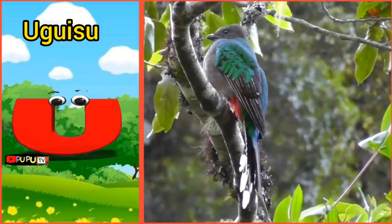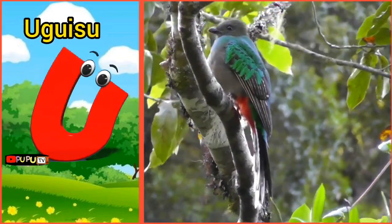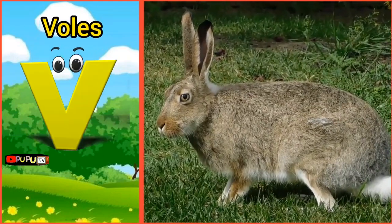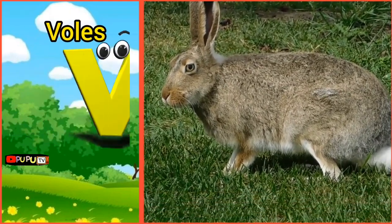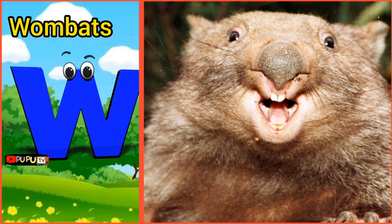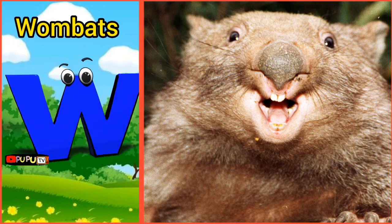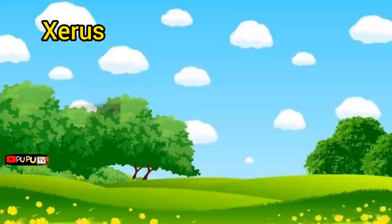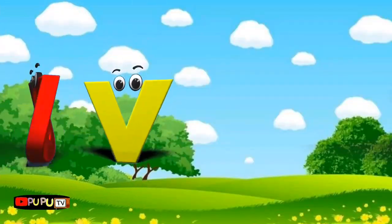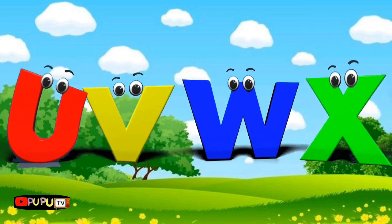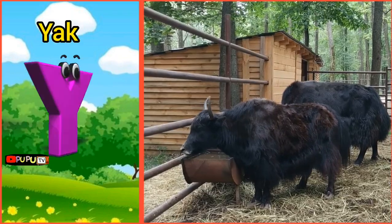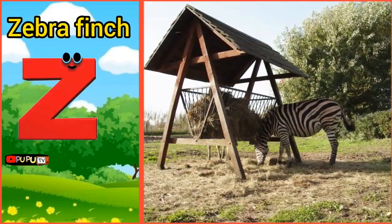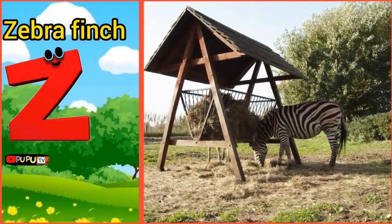U is for Uguisu. U, U, Uguisu. V is for Voles. V, Voles. W is for Wombat. W, Wombat. X is for Xerus. X, Xerus. Y is for Yak. Y, Y, Yak. Z is for Zebra Finch. Z, Zebra Finch.